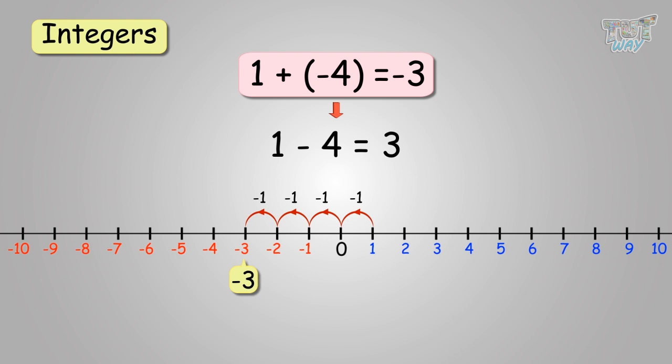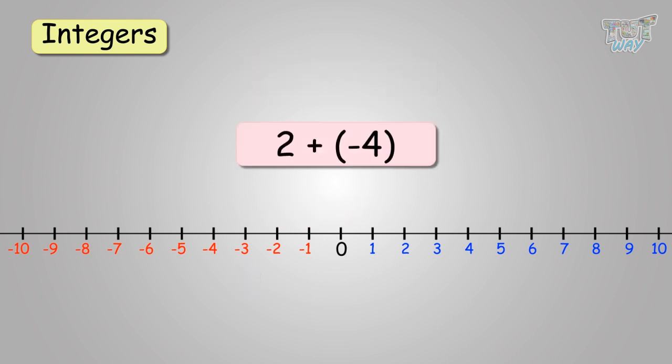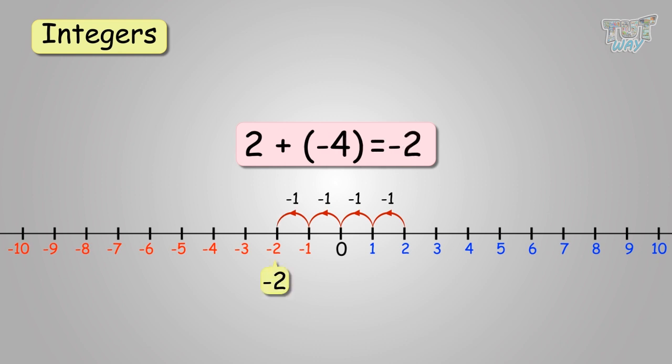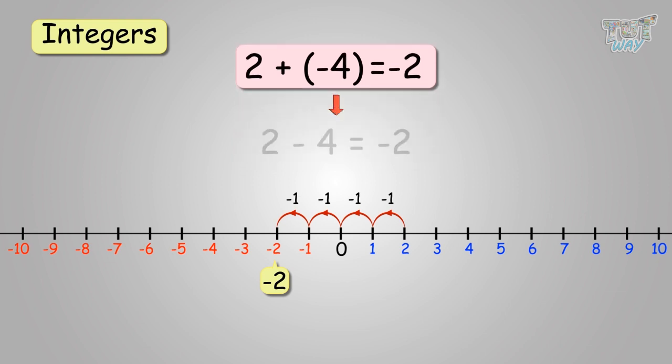So, we have another question. We have to add negative 4 to 2. You will start at 2, then move 4 places towards the left: 2 to 1, 1 to 0, 0 to negative 1, negative 1 to negative 2. So, we get the final answer as negative 2. This equation can be rewritten as 2 minus 4 equals negative 2.